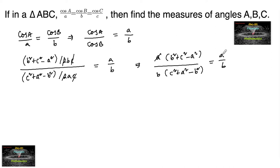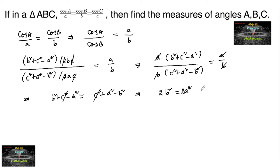Here A and A, B and B get cancelled. So we have B² + C² − A² is equal to C² + A² − B². Taking like terms to each side, 2B² and C² cancel with C², and A² + A² gives 2A². This implies B² is equal to A².